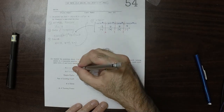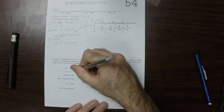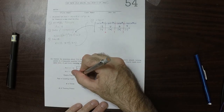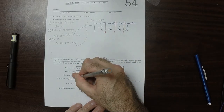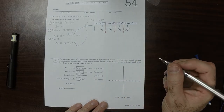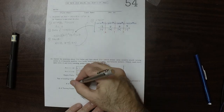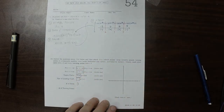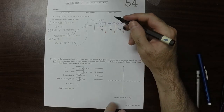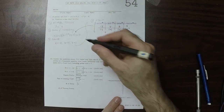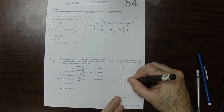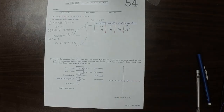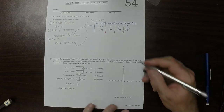As x goes to the left, the output is negative. As x goes to the right, the output is also negative. For that reason, the degree parity must be even. The sign of the leading coefficient must be negative. The number of zeros is 3. So now let's sketch — the zeros are negative 2, 1, and 3.